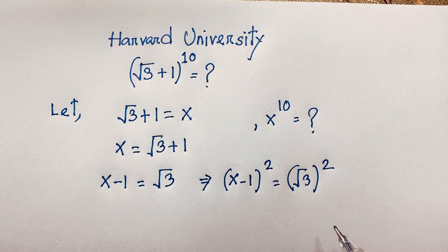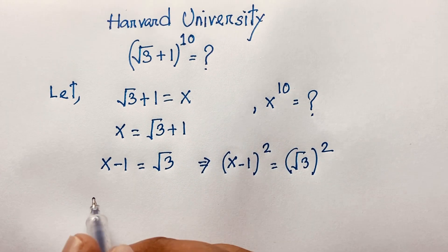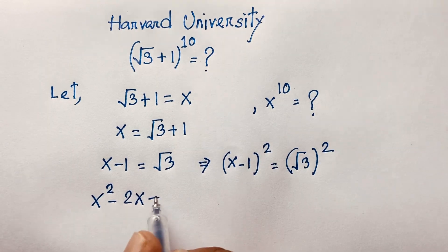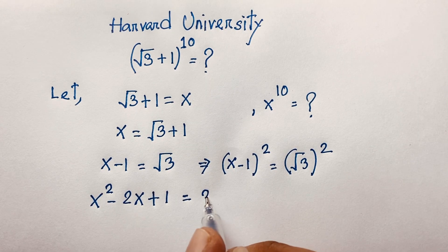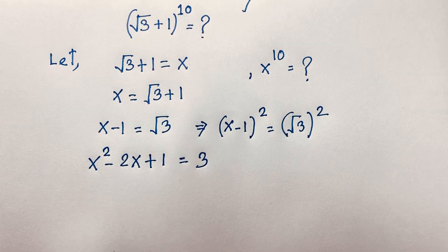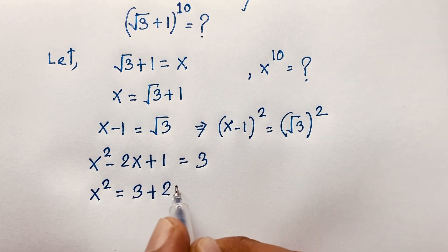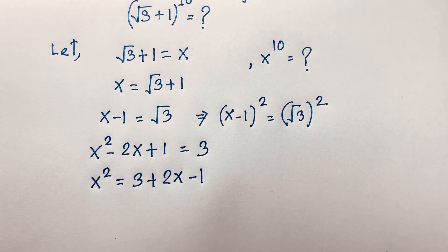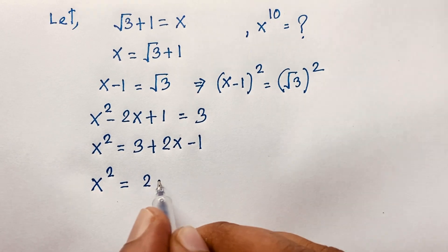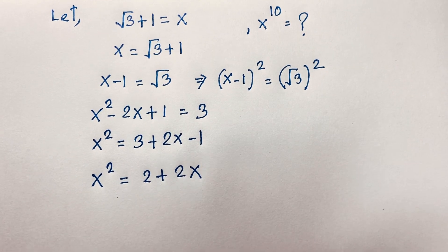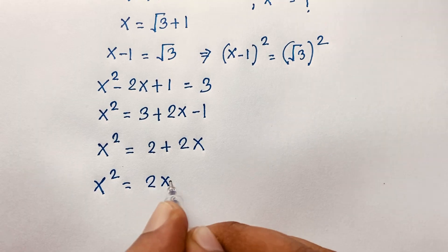I solved this question step by step. You can see the formula a minus b whole square equals a squared minus 2ab plus b squared. Here 1 squared is 1, and square root 3 squared is 3 — the square root is cancelled. So it will be x squared is equal to 3 minus 1, which is 2, plus 2x. Therefore x squared equals 2x plus 2.